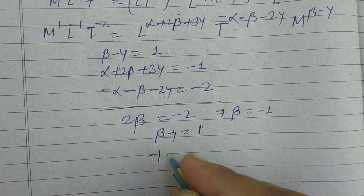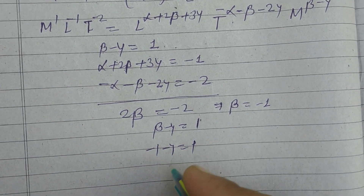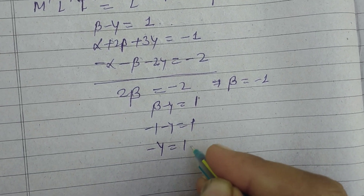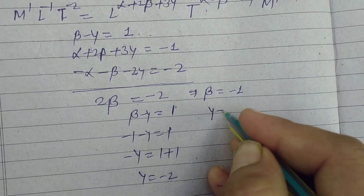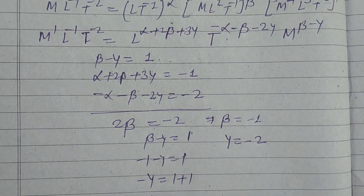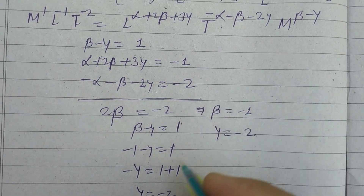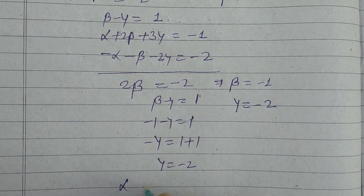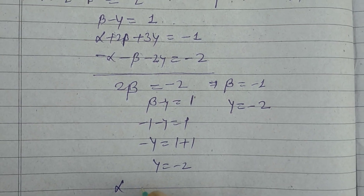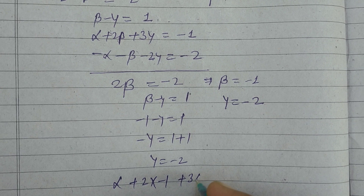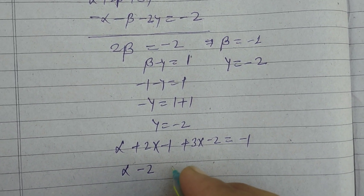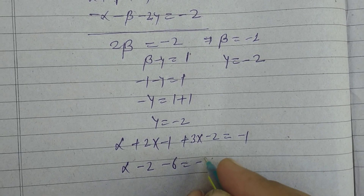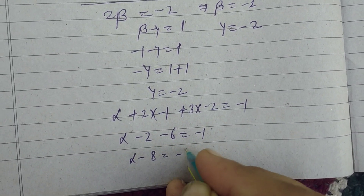Substituting beta equals minus 1 into the first equation: minus 1 minus gamma equals 1, so minus gamma equals 2, therefore gamma equals minus 2. Now substituting into the second equation: alpha plus 2(minus 1) plus 3(minus 2) equals minus 1, giving alpha minus 2 minus 6 equals minus 1, so alpha minus 8 equals minus 1.